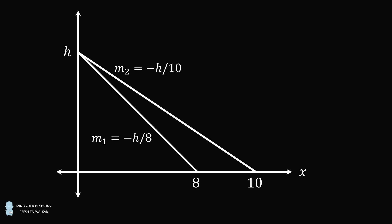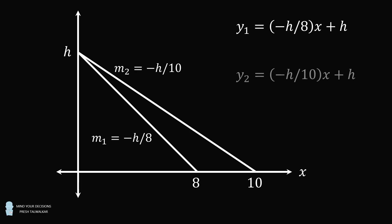So we can write equations for each of these lines. The first line will be y1 is equal to negative h over eight multiplied by x plus h, and the second will be y2 is equal to negative h over ten multiplied by x plus h. We want the time at which the first candle is exactly half the height of the second candle.